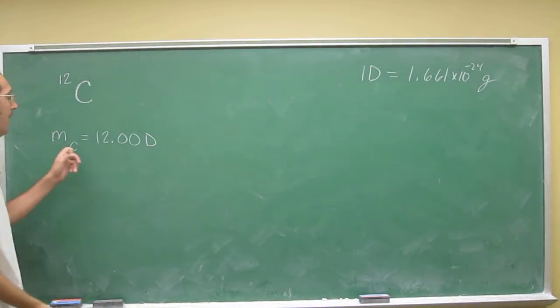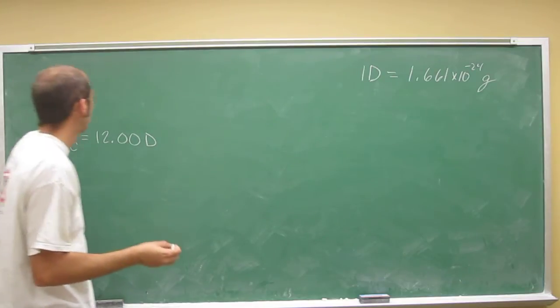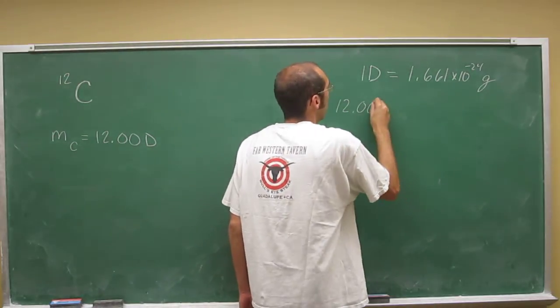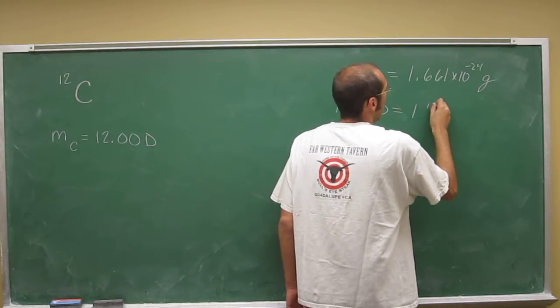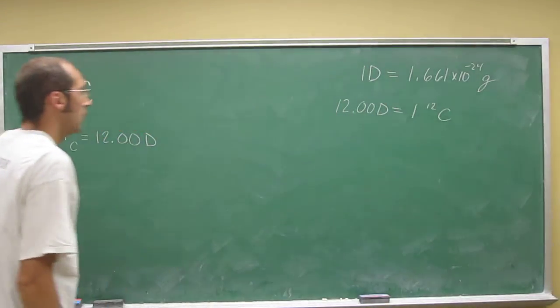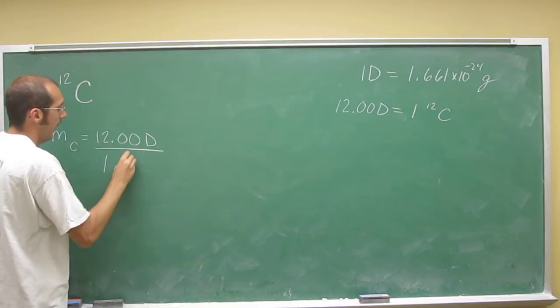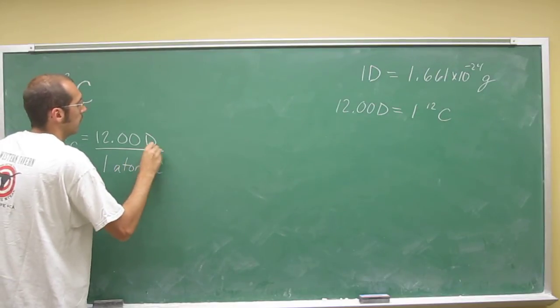So this is the mass of one atom of carbon-12. You've also got another conversion factor, right? So 12.00 Daltons equals 1 atom of carbon-12.